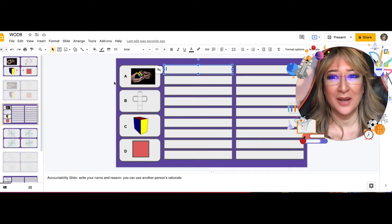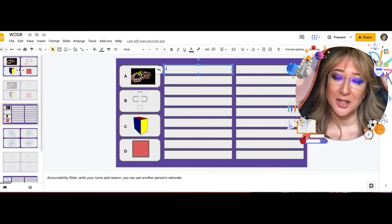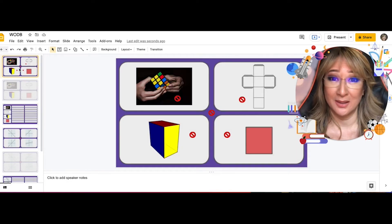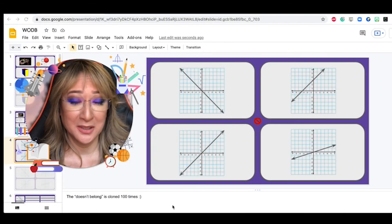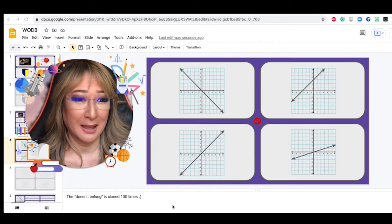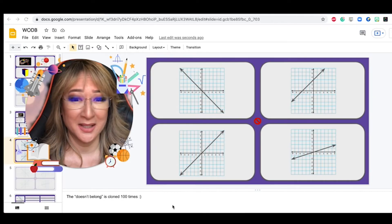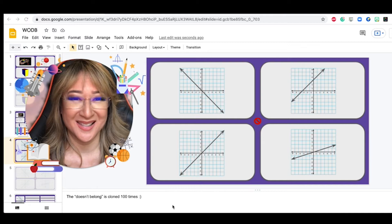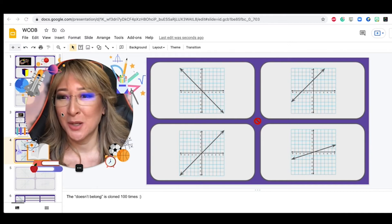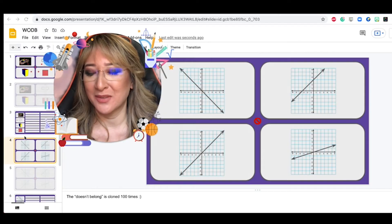On that third slide, you actually ask your students to write their name because that's the accountability slide and the reason, and you can use another person's rationale. So I was working with a faculty and they actually came up with this wonderful idea. I actually had two here. I gave them a choice, either doing this routine or this one. You could be looking at coordinate geometry here or looking at linear functions and their y-intercepts and their slope. You could be looking at increasing, decreasing functions.